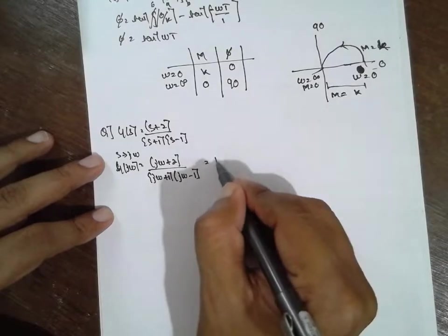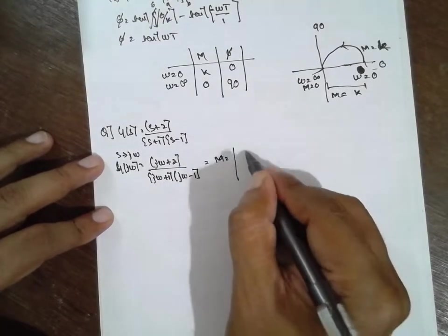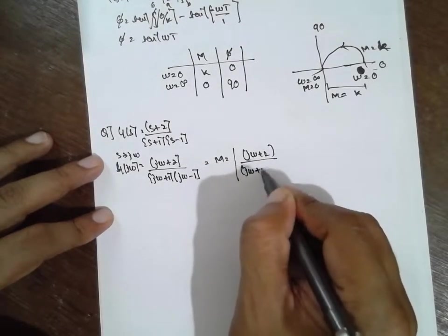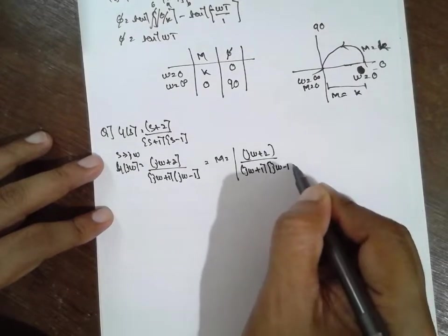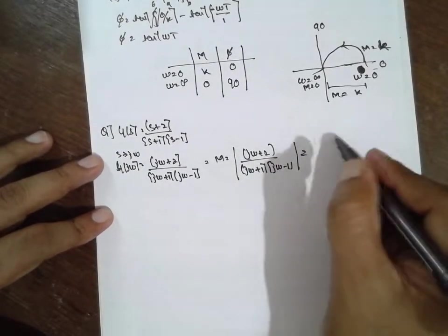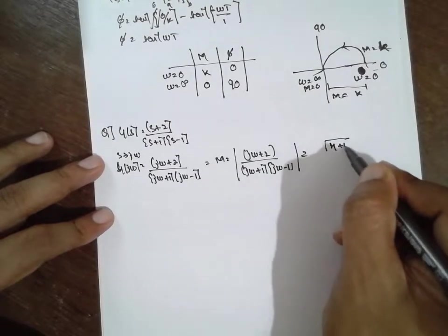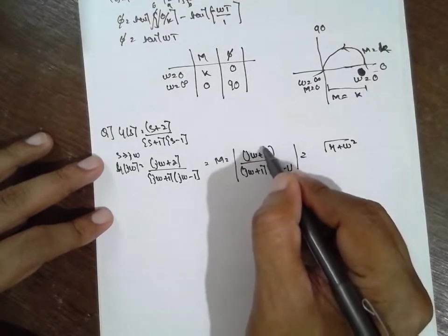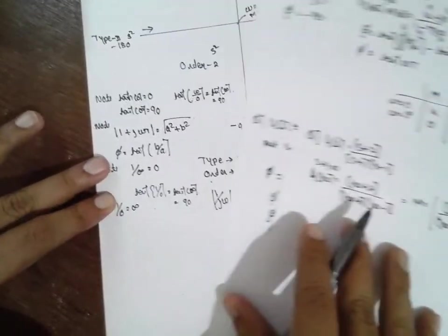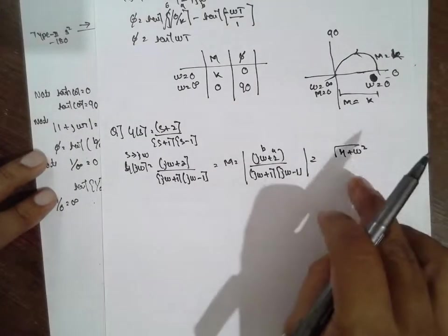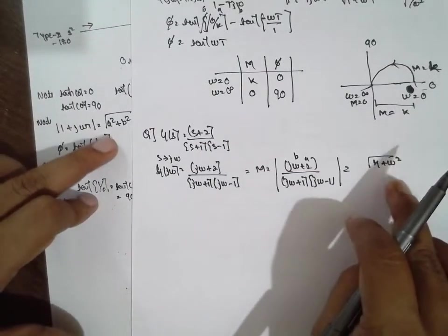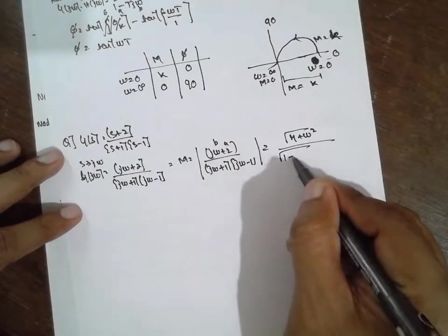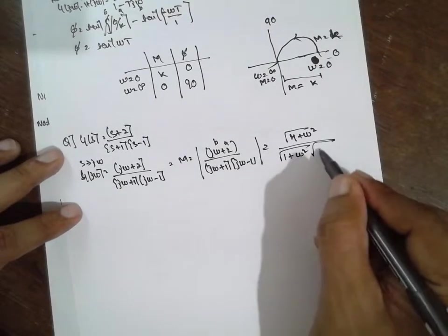Magnitude for this one: modulus of (jω plus 2) is root(4 plus ω²). Divided by modulus of (jω plus 1) which is root(1 plus ω²) and modulus of (jω minus 1) which is also root(1 plus ω²). So magnitude equals root(4 plus ω²) divided by (1 plus ω²).